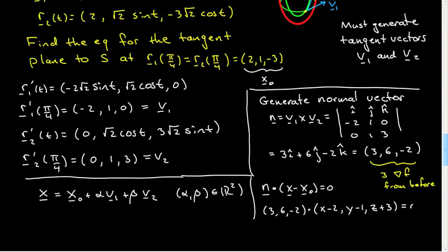So that's going to be (3, 6, -2) · (X - 2, Y - 1, Z + 3) = 0. That gives 3X - 6 + 6Y - 6 - 2Z - 6 = 0, which equals 3X + 6Y - 2Z = 18, which is the same as last time. So that is the tangent plane.